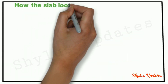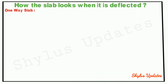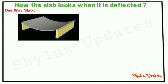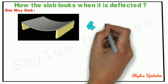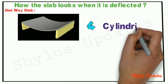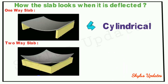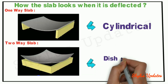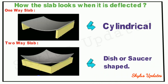How does the slab look when it is deflected? The deflected shape of a 1-way slab is cylindrical, while the deflected shape of a 2-way slab is dish or saucer shaped.